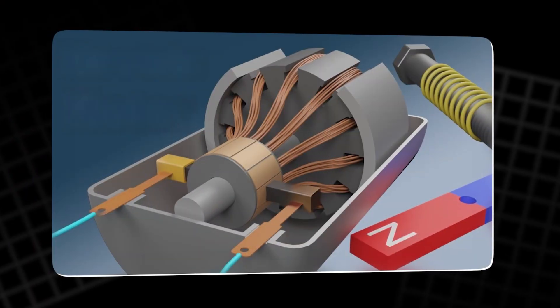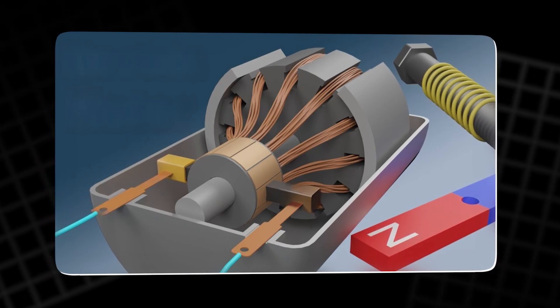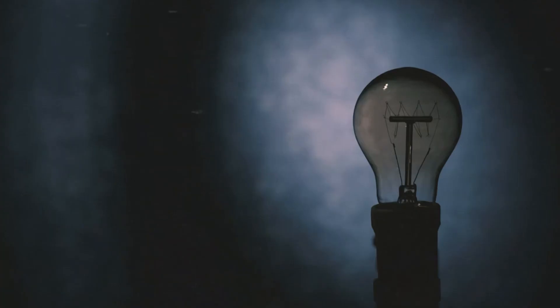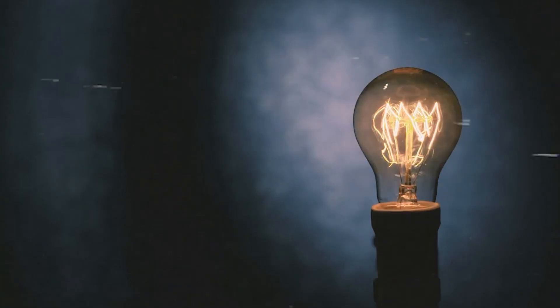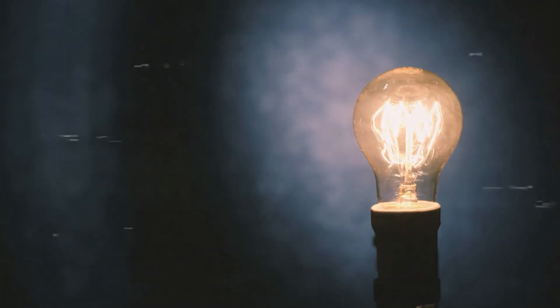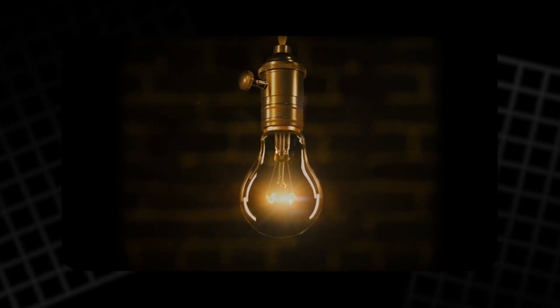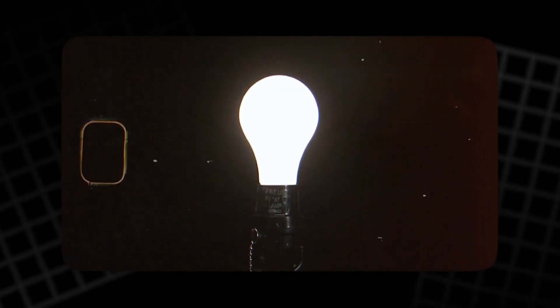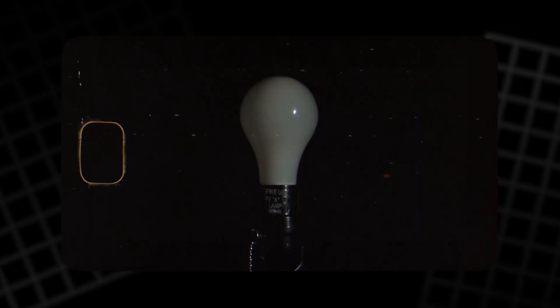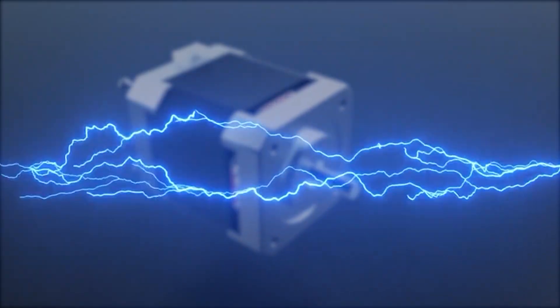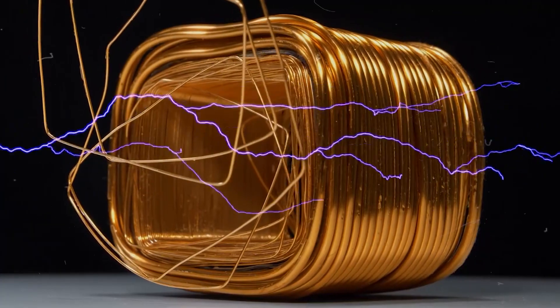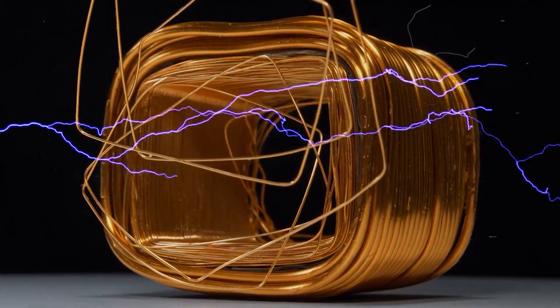The journey starts with the concept of a circuit. A battery provides the source of energy, wires form a path, and a device such as a light bulb consumes the power. Current flows when the path is complete, and the bulb shines brightly. Break the path, however, and the light immediately dies out. This demonstrates one of the most fundamental laws of electricity. Current cannot travel through an incomplete loop.